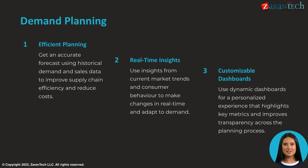First, let's look at demand planning. IBP provides efficient demand planning capabilities that allow you to create accurate forecasts using historical sales data. The system looks at trends and patterns to predict future demand. This improves supply chain efficiency and reduces costs associated with demand variability.